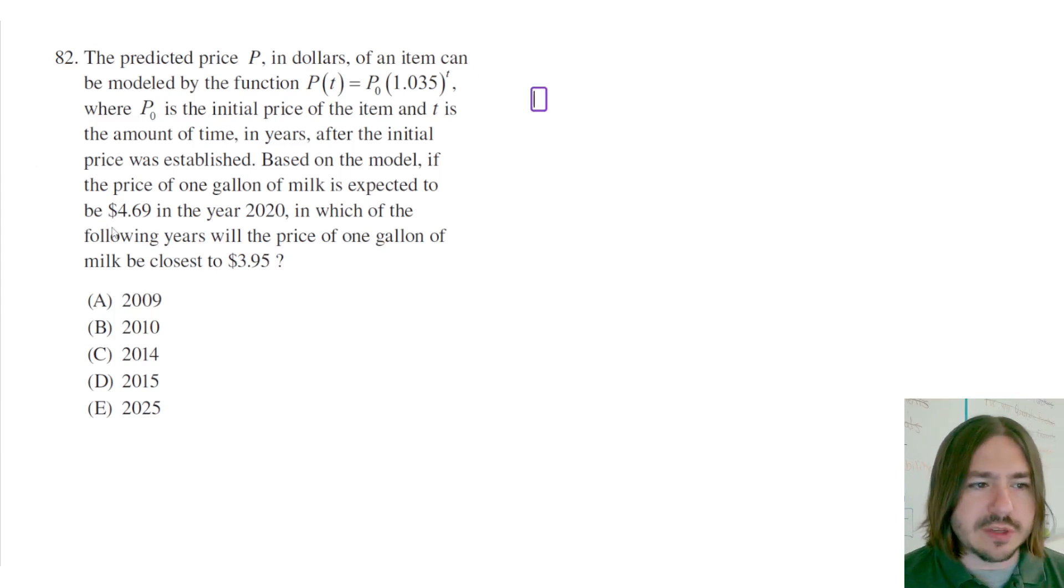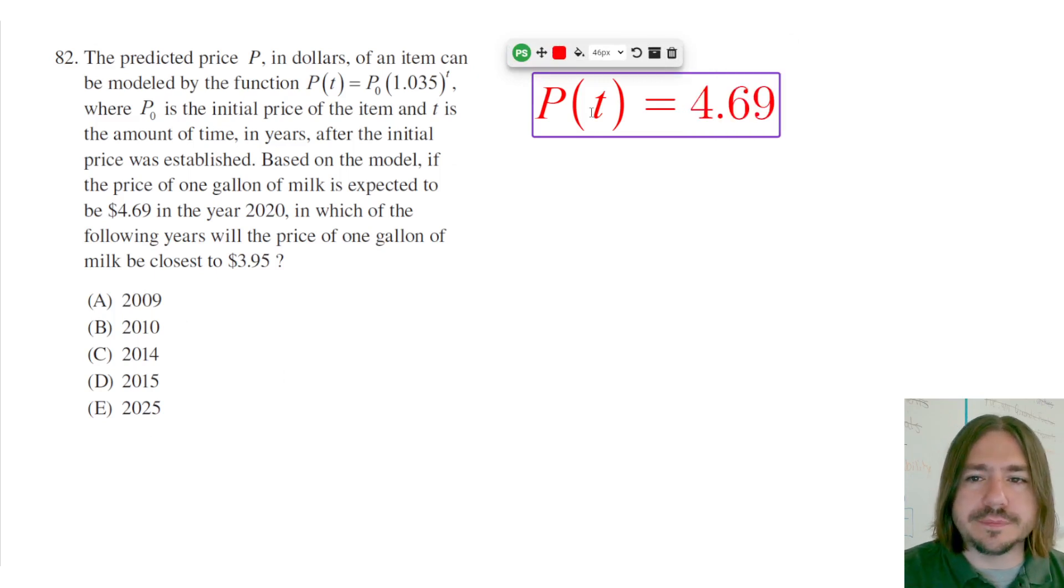So I'm going to go ahead and just retype this equation. We know that in 2020 the price is $4.69. So what we can do is use that as our initial price. And then all these other years are going to be before that happens, so the t values for each of these will be negative. So the initial price is going to be $4.69, and that's going to be in the year 2020.